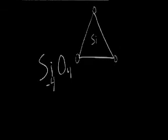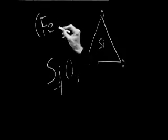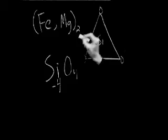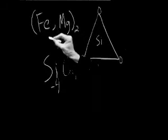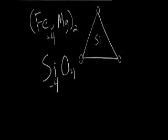In the case of olivine, that role is filled by either two atoms of iron or two atoms of magnesium, or one of each, which has a charge of plus four, so that the whole molecule has a neutral electrical charge.